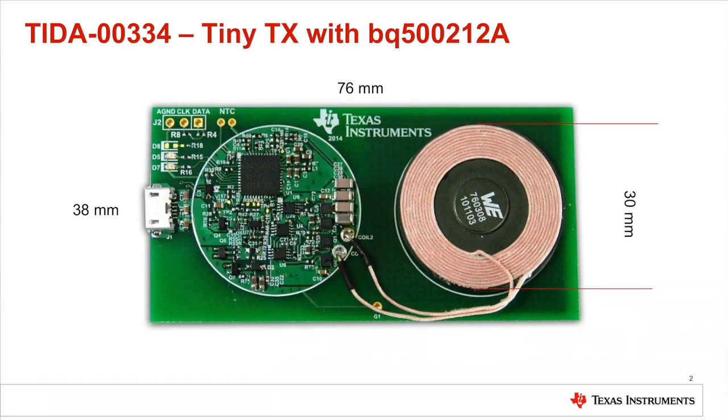Starting with the Qi compliant BQ500212A EVM-520, we created a tiny transmitter showing that the full transmitter solution can be no larger than a corresponding 30mm diameter transmitter coil. This solution is compatible with the Wireless Power Consortium Qi protocol.